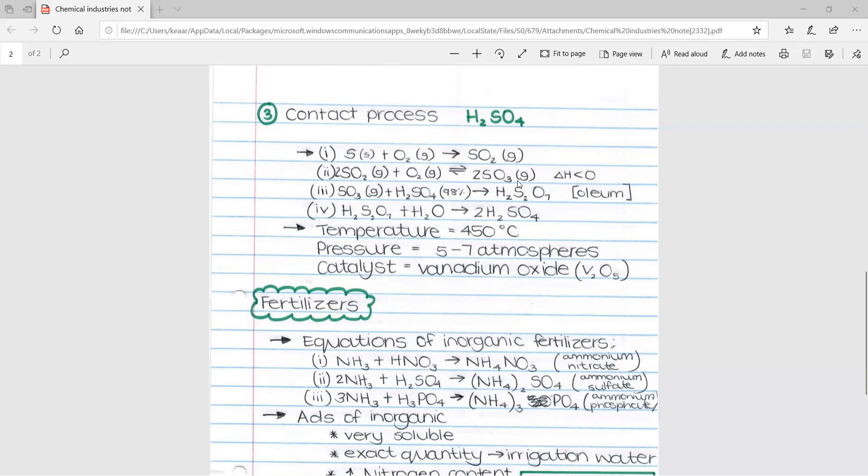We then take our oleum and use it in our fourth reaction. So we have H2S2O7 plus H2O to form 2H2SO4.